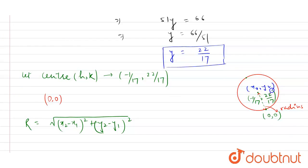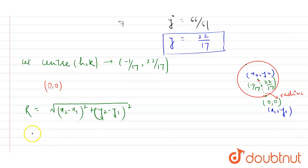Now students, our radius will be equal to √[(x2-x1)² + (y2-y1)²] which gives √[(-1/17 - 0)² + (22/17 - 0)²].